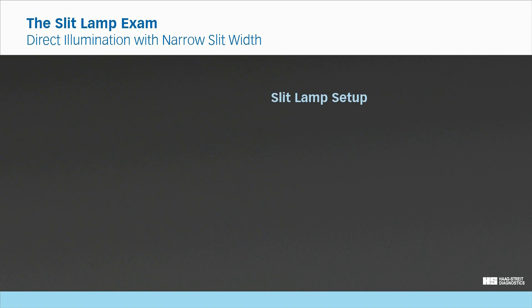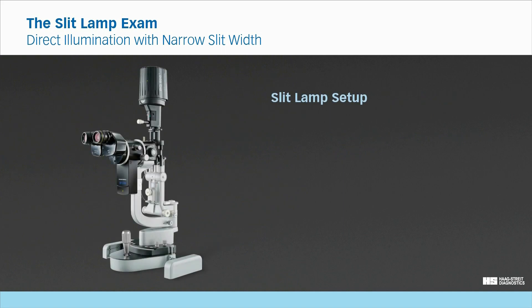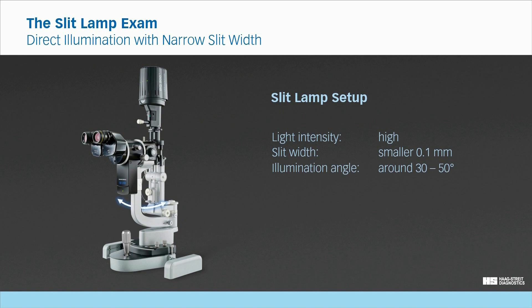Slit lamp setup. To set up the slit lamp, choose a high light intensity and a very narrow slit width. The illumination angle is selected according to anatomical conditions, somewhere between 30 and 50 degrees. A magnification of 16 times to 25 times is recommended to localize the depth of alterations, and 10 times to 16 times for assessing the profile of the cornea.